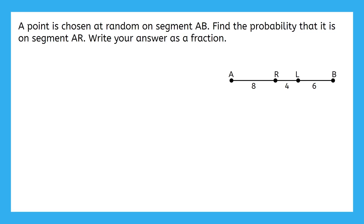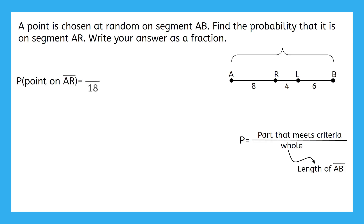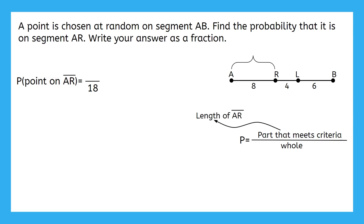This example says: a point is chosen at random on segment AB. Find the probability that it's on segment AR. Write your answer as a fraction. The length of the whole thing would be the length of segment AB, which is 8 plus 4 plus 6, or 18 units. The part that meets the criteria of being on segment AR would just be 8 units. We were told to write our answer as a fraction, and 8 over 18 can be reduced to 4 over 9.